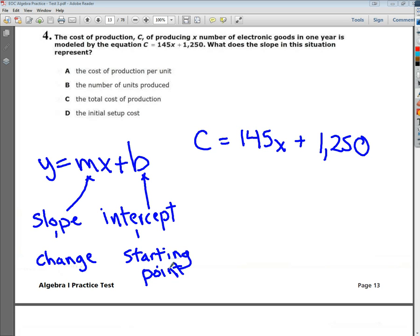So in my equation, when I go back and look at it, it tells me that C is the cost. So I'm going to write cost underneath it. My X value, I know, is goods. So, electronic goods.